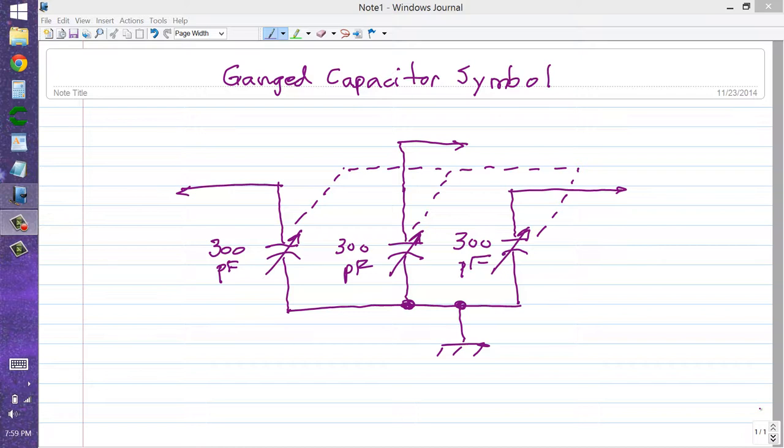That is to say, schematic diagrams of older electronic equipment that uses air variable capacitors like this. These three air variable capacitors are 300 picofarads each.